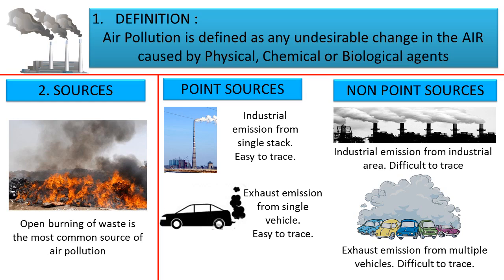But how do you find out which of the cars in a busy traffic intersection are actually causing air pollution? That is the problem with non-point sources — they are very difficult to trace. Apart from point and non-point sources, there are also other kinds called area source or line source. For example, if air pollution takes place along a line such as a straight highway, we call it a line source.